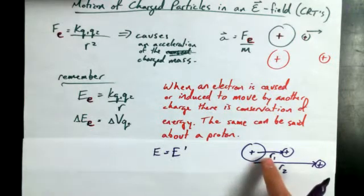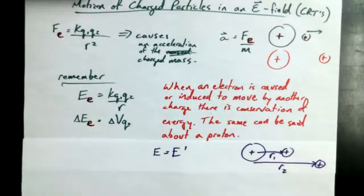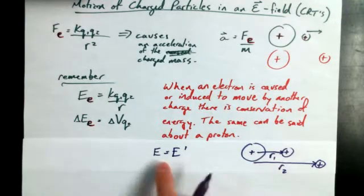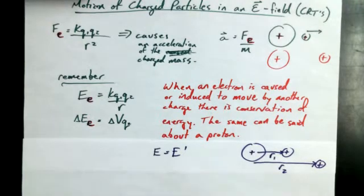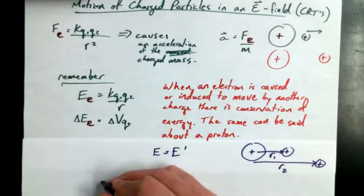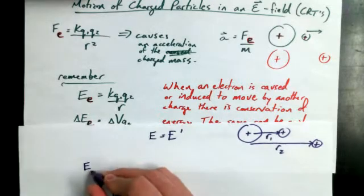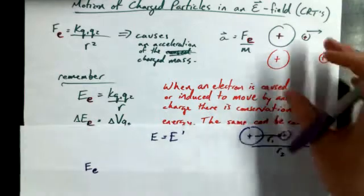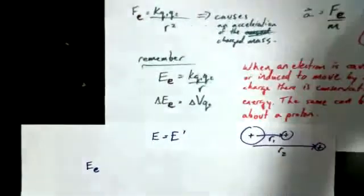So, r2, we're going to talk about the energy when it's at its initial position versus the energy when it's at its final position. So, r1 is going to be the before scenario, and r2 is going to be the after scenario. So, in the before scenario, we might talk about its electric potential energy.